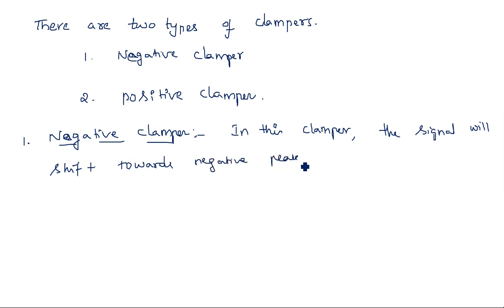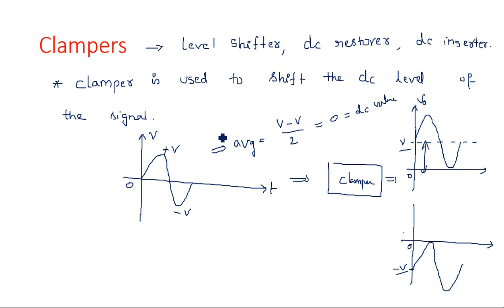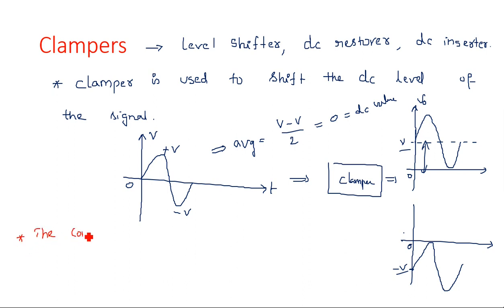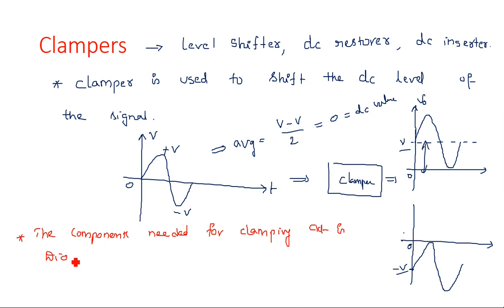Now let us look at the circuit diagram and the components needed to construct this clamper. The components needed for clamping action are a diode and a capacitor. These two are the important elements used to construct this particular clamping circuit.